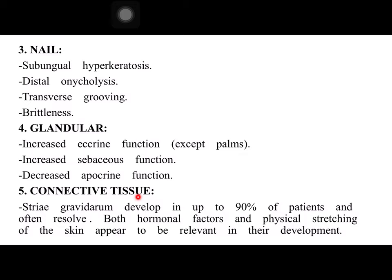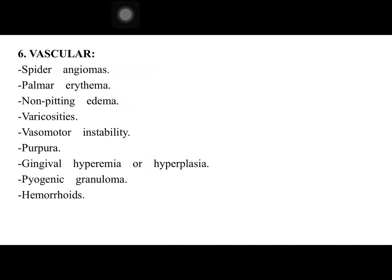In connective tissue, the most important change occurring in nearly all pregnant women is striae gravidarum, occurring in up to 90% of patients, and often may resolve or decrease in appearance. Both hormonal factors and physical stretching of the skin appear relevant to their development. Vascular changes that occur normally in pregnancy include spider angioma, palmar erythema, non-pitting edema — especially common in late pregnancy — varicosities, vasomotor instability, gingival hyperemia or hyperplasia, pyogenic granuloma — especially common after injury — and hemorrhoids.